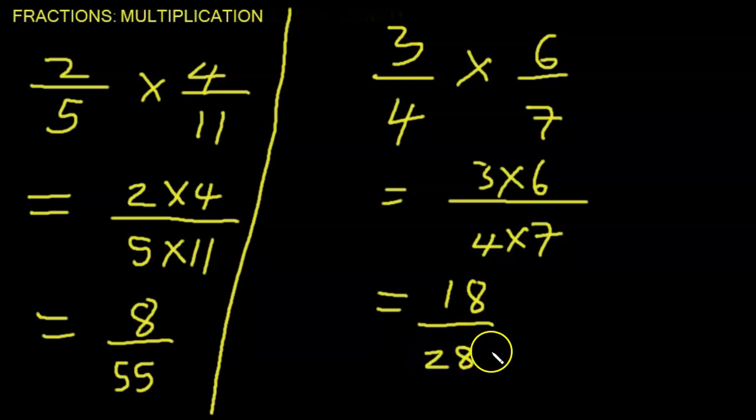And can that be reduced? Can it be simplified? Yes, it can be. We can divide both of these values by 2. To simplify, divide 18 by 2, we get 9. And divide 28 by 2, we end up with 14.